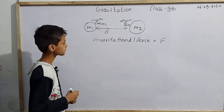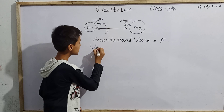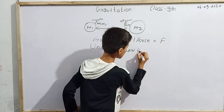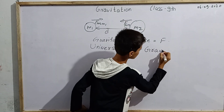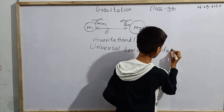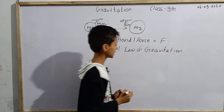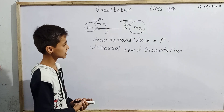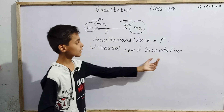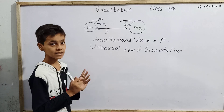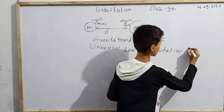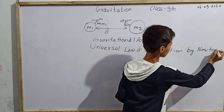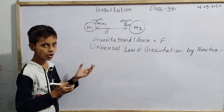Now the question arises: what is the universal law of gravitation? It is called a universal law because it is applicable in all cases and all fields. The universal law of gravitation was given by Sir Isaac Newton, or simply Newton.